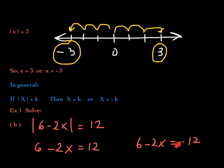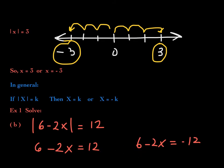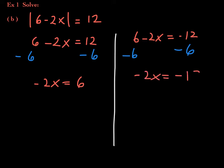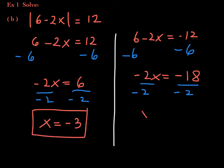What you are changing is your constant. Now solve each equation separately. Subtracting 6 from both sides of each gives negative 2x equals 6 on the left, and negative 2x equals negative 18 on the right. Dividing both sides by negative 2 gives the two solutions: x equals negative 3, and x equals positive 9.